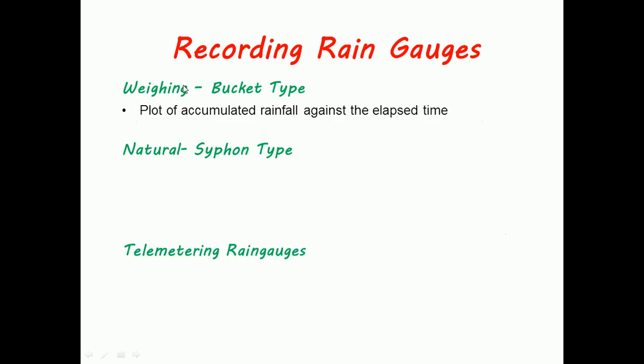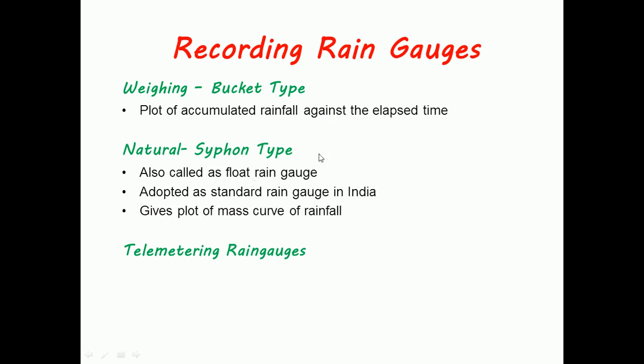Weighing bucket type gives a plot of accumulated rainfall against elapsed time. Natural siphon type, also called float rain gauge, is adopted as standard recording rain gauge in India. It gives a plot of mass curve of rainfall.